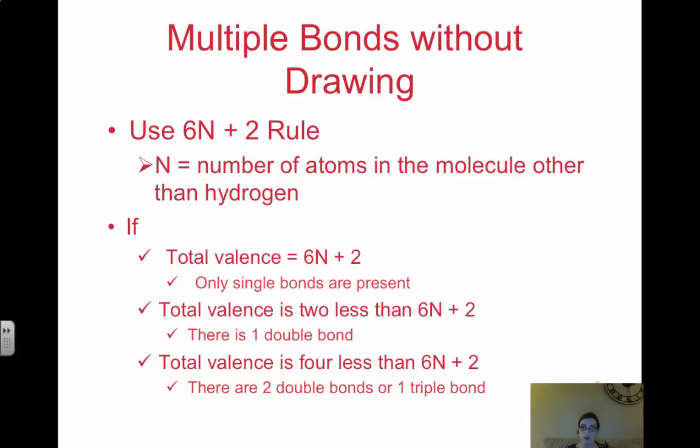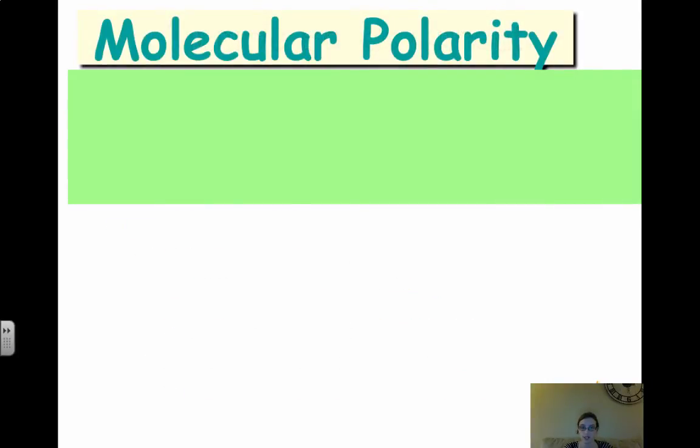This is just a way to know if you have multiple bonds without drawing. Use the 6N plus 2 rule. Again, multiple bonds only happen with C, O, N, or S.